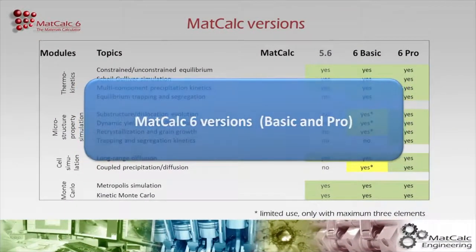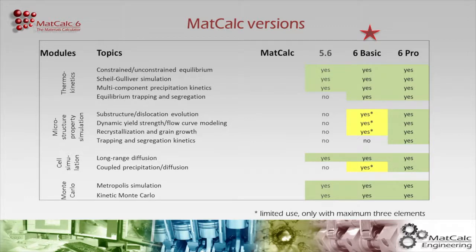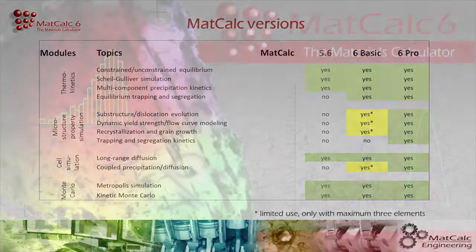With the two available MATCALC 6 versions, BASIC and PRO, you can choose the product that matches your needs. The MATCALC 6 BASIC version offers the classic MATCALC simulation features for multi-component thermodynamics and precipitation kinetics. Most new features of the MATCALC PRO version are also available to try out on systems containing a maximum of three elements. MATCALC 6 PRO is the version with full capabilities, including multi-component modeling of microstructural evolution and thermomechanical processing, enabling your enterprise to optimize production process routes for high-quality products.